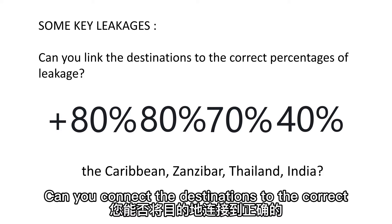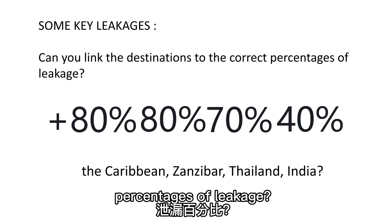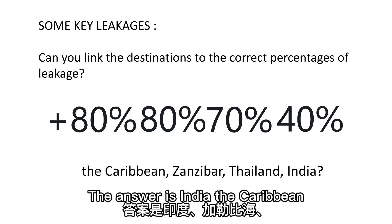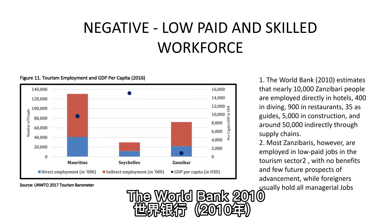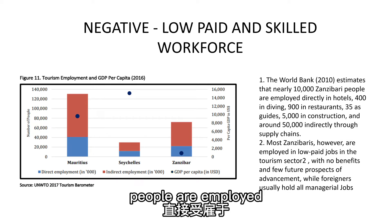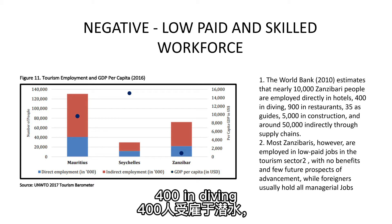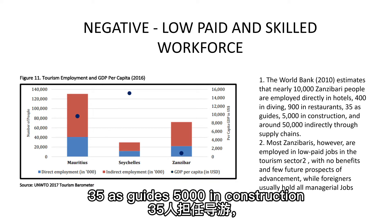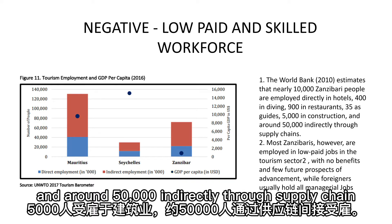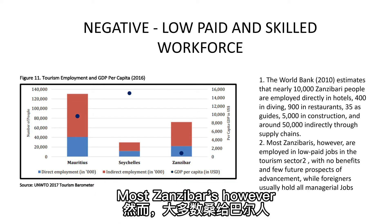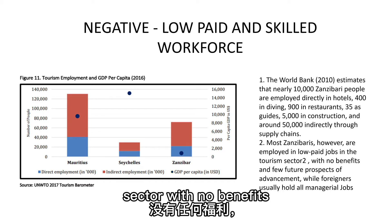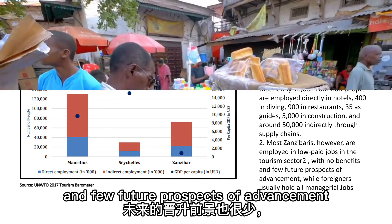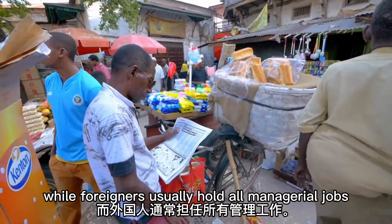Unreliable capacity in terms of quantity and quality of local supplies are among the leading factors that trigger high leakages. The World Bank 2010 estimates that nearly 10,000 Zanzibari people are employed directly in hotels, 400 in diving, 900 in restaurants, 35 as guides, 5,000 in construction, and around 50,000 indirectly through supply chains. Most Zanzibaris, however, are employed in low-paid jobs in the tourism sector with no benefits and few future prospects of advancement, while foreigners usually hold all managerial jobs.